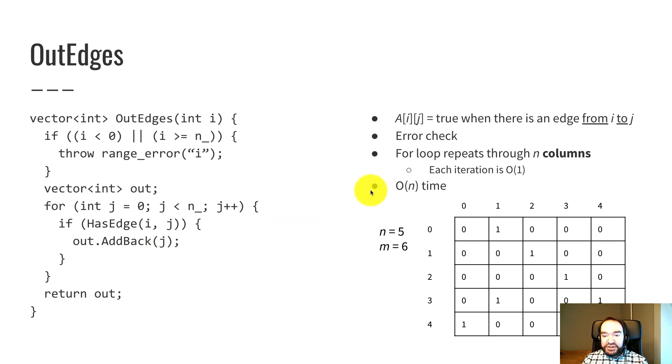It's not super complicated, but it's less efficient. This loop clearly has n iterations. Has edge is constant time. Adding to the back of a vector is constant amortized time. So this whole thing takes big O of n time.